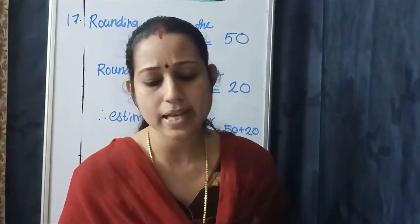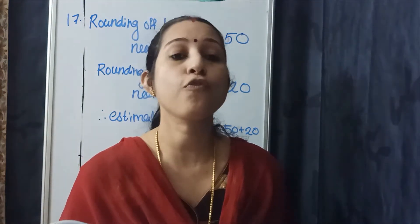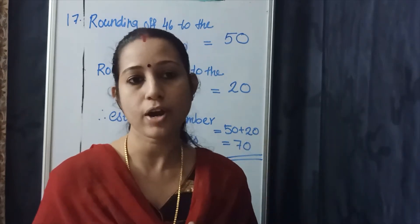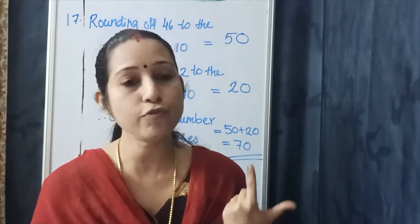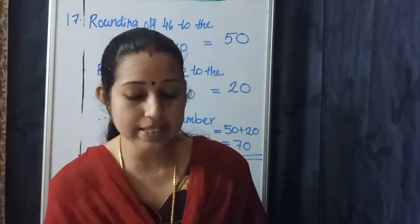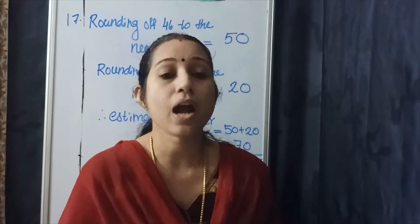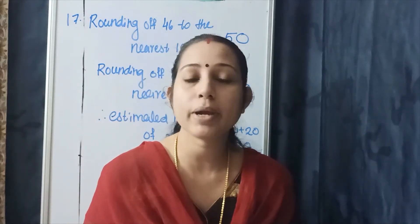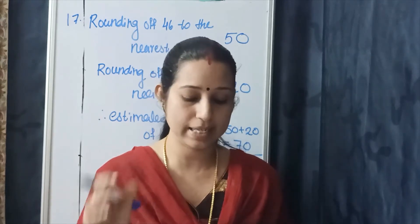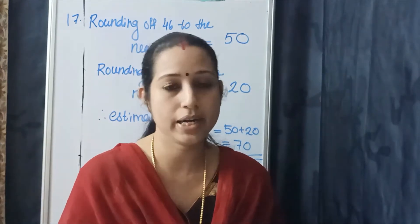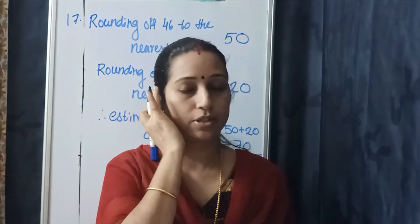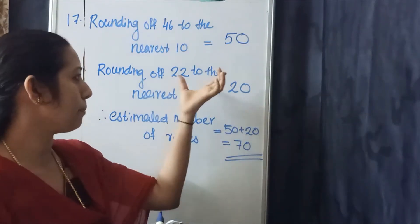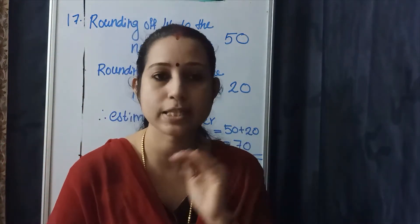Question number 18: Rakesh has 57 pencils and Mukesh has 43 pencils. Estimate the total number of pencils that they have. Here also, we want to find the estimated sum of 57 and 43. First step: rounding off 57 to the nearest 10. Then rounding off 43 to the nearest 10. Therefore, the estimated number of pencils they have altogether is equal to 60 plus 40, which is equal to 100. So 100 is the answer.